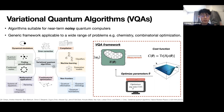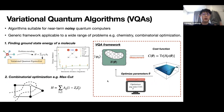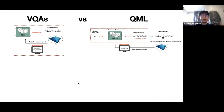Examples of problems you can apply this framework to include finding the ground state of a molecule — where you define your cost function to be the molecular Hamiltonian — or combinatorial optimization, where you define it to be the Hamiltonian of an Ising spin chain. These two settings are really similar to each other.